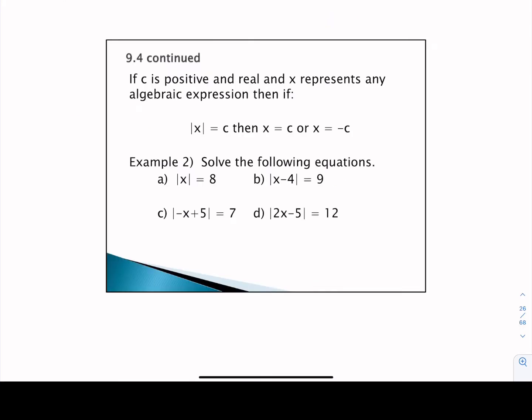Now that we've had a refresher on how to evaluate absolute values for certain numeric values, we want to move into how to solve equations that contain absolute values. We have the absolute value of X equal to some constant C. If C happens to be positive and real, then whatever we have for X — the argument inside those absolute value symbols — can be either positive C or negative C. So if the absolute value of X equals C, then X is either positive C or X must be negative C.